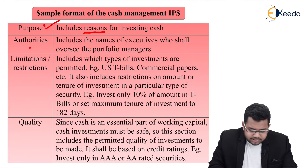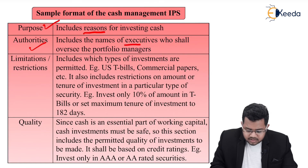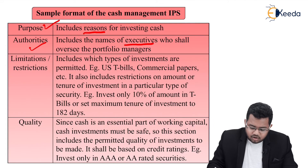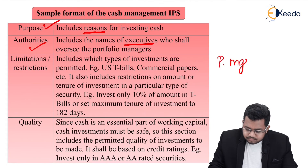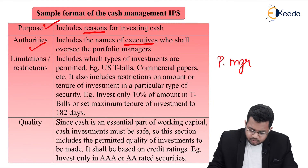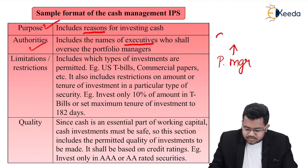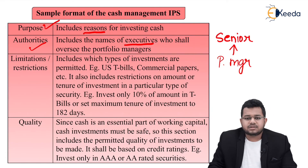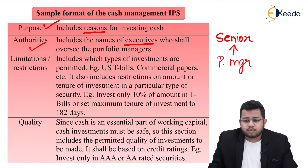Next, authorities — who has the authority. It includes names of executives who shall oversee the portfolio managers. In a corporate structure, the portfolio manager will actually manage your whole portfolio, but there has to be some senior executive who will perform oversight over the portfolio managers. We write their names here.